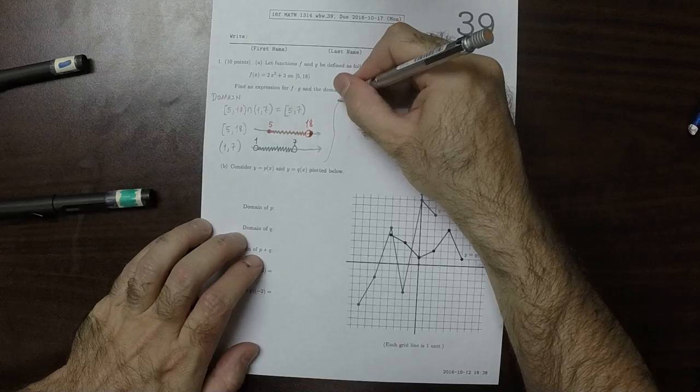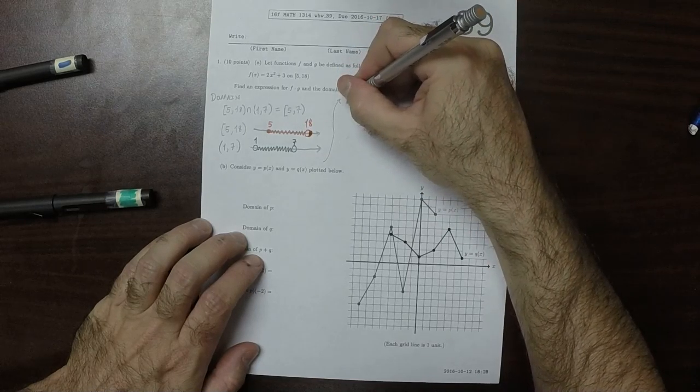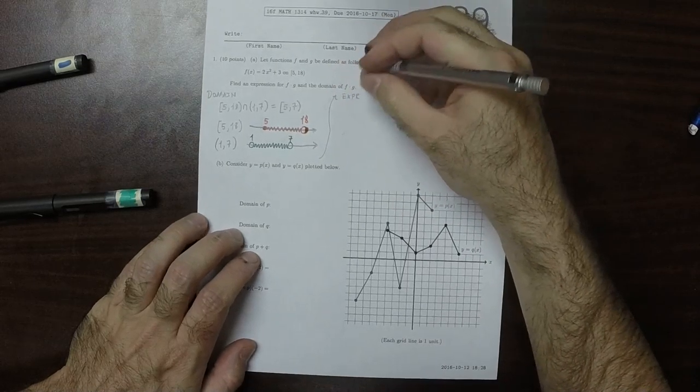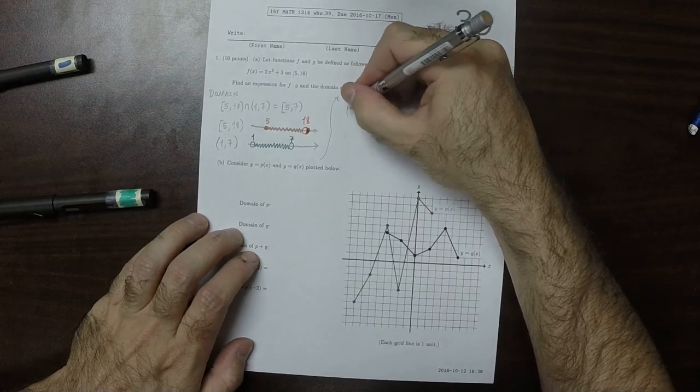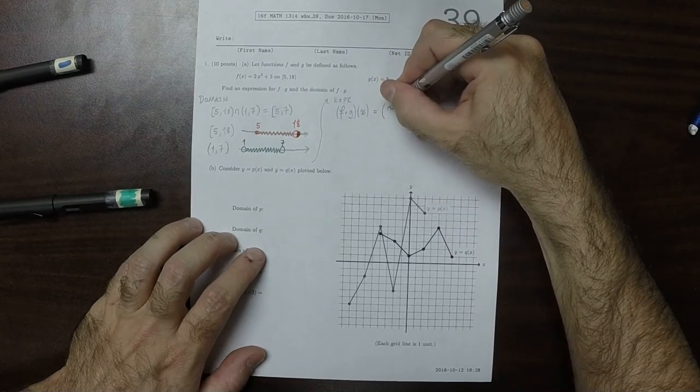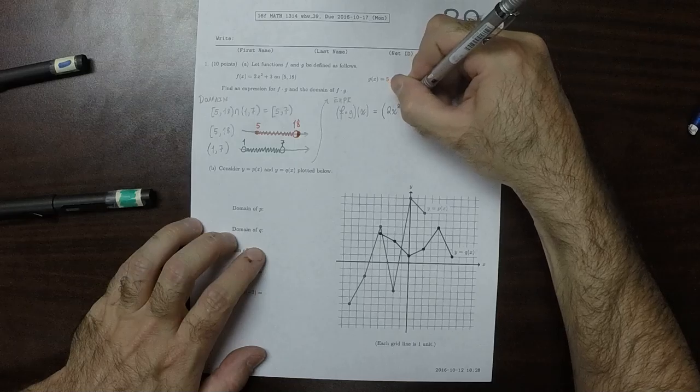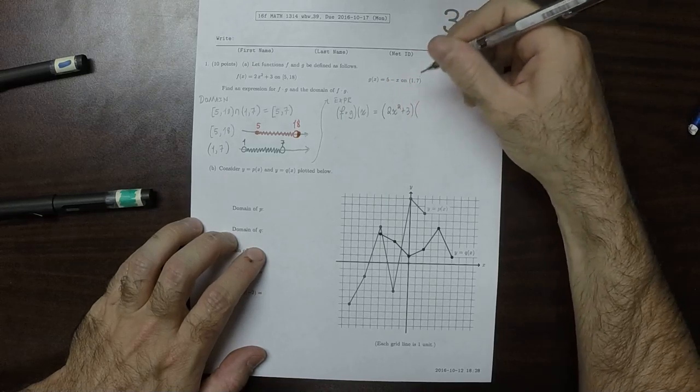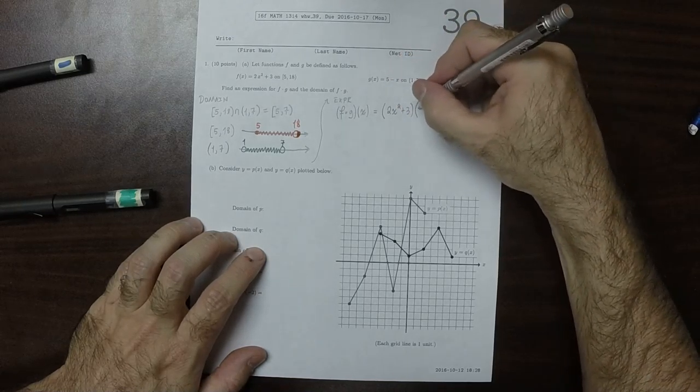So for the expression, f dot g evaluated at x, well that's the product of these things. So 2x squared plus 3 multiplied by 5 minus x.